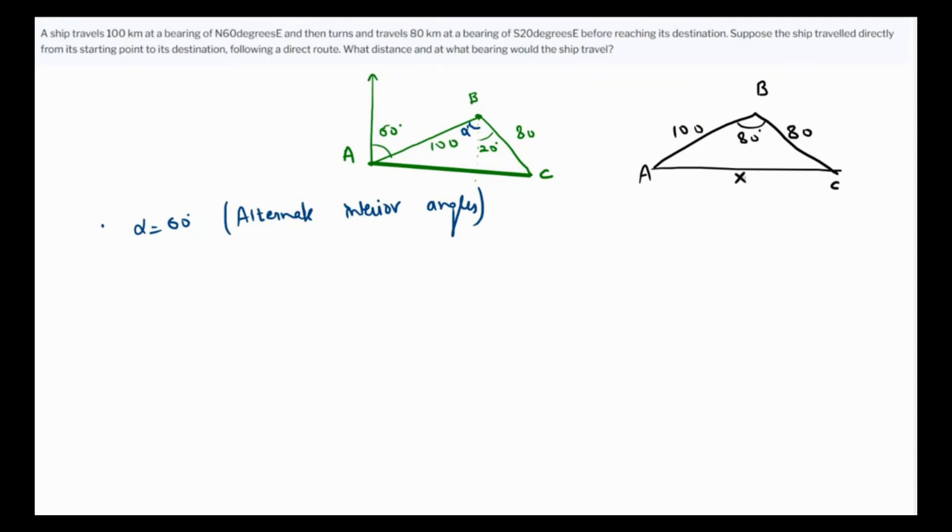If we apply law of cosines, let's say this is x which we have to find. Cosine of 80 degrees is going to be the sum of the square of the adjacent sides, so 100 squared plus 80 squared minus opposite side squared x squared, over 2 times 100 times 80. Cross multiply: 2 times 100 times 80 times cos 80 degrees equals 100 squared plus 80 squared.